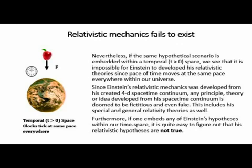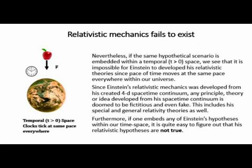Relativistic mechanics fails to exist. If the same hypothetical scenario is embedded within a temporal, T greater than zero space, it is impossible for Einstein to develop his relativistic theories, since the pace of time moves at the same pace everywhere within our universe. Since Einstein's relativistic mechanics was developed from his created 4D space-time continuum, any principle, theory, or idea developed from it is doomed to be fictitious and even fake. This includes his special and general relativity theories. Furthermore, if one embeds any of Einstein's hypotheses within our time-space, it is quite easy to figure out that his relativistic hypotheses are not true.